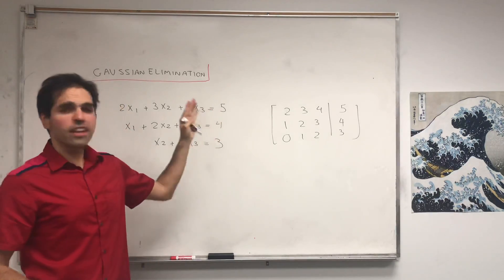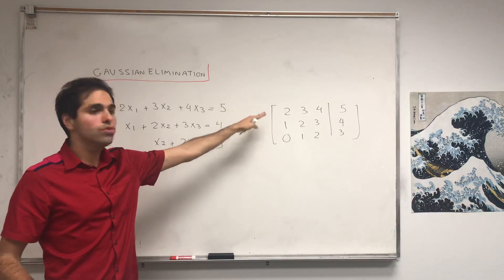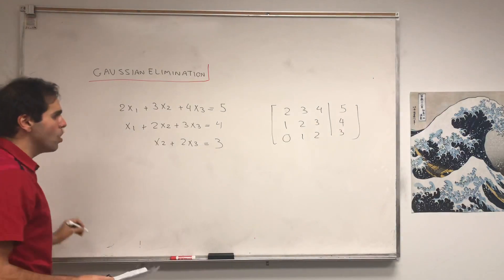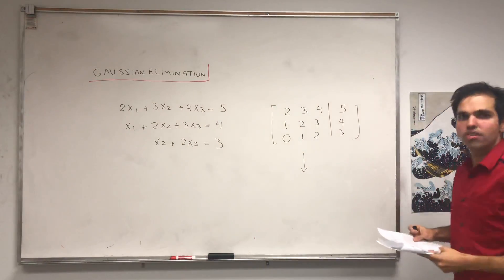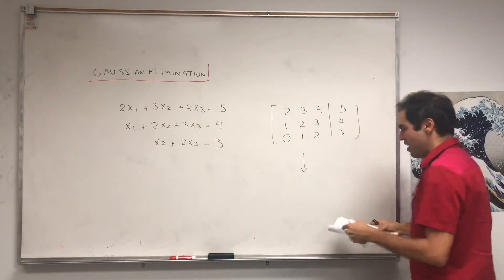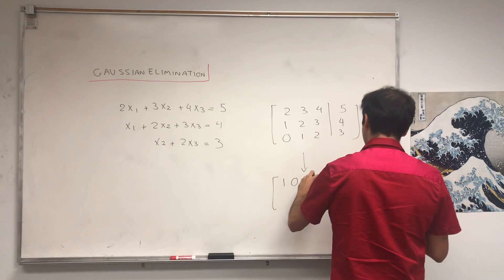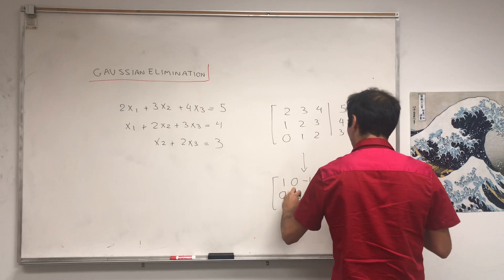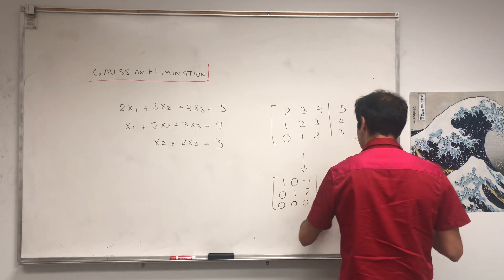And then the next step people usually do in Gaussian elimination is to take this matrix and row reduce this, either to row echelon form or reduced row echelon form. And if you do that, you get something like [1, 0, -1, -2], [0, 1, 2, 3], and [0, 0, 0, 0].